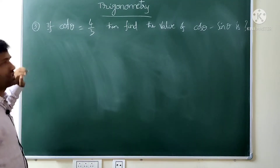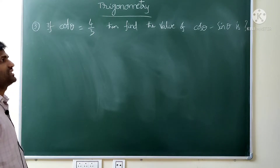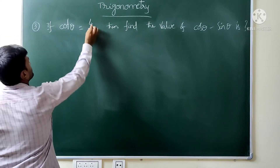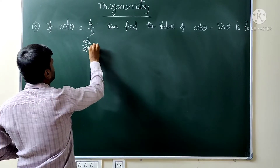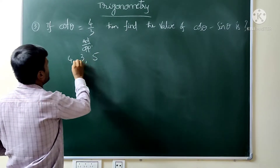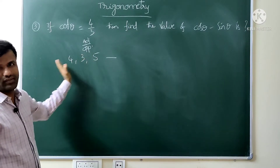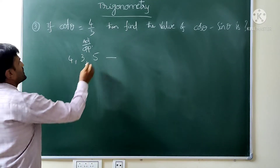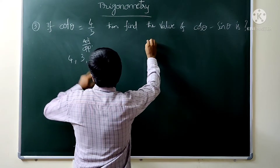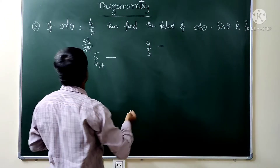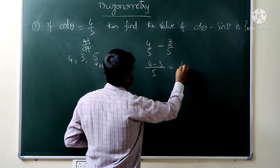Third question: if cot θ equals 4 by 3, then find the value of cos θ minus sin θ. Cot means adjacent side by opposite side. So cos θ is adjacent side by hypotenuse: 4 by 5. Minus sin θ, opposite side by hypotenuse: 3 by 5. Taking LCM of 5, we get 4 minus 3 = 1 by 5.